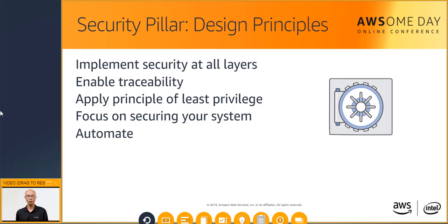Enable traceability through logging and auditing all actions or changes to your environment. Another useful design principle is the principle of least privilege — make sure that authorization within your environment is adequate and that you are implementing strong logical access controls to your AWS resources, granting minimal privileges for business requirements.